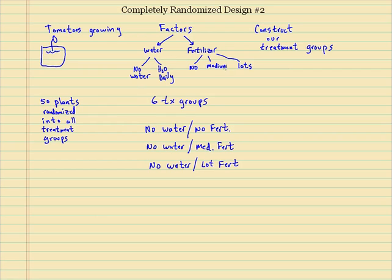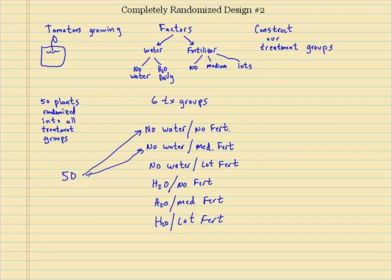So now what we would do is we have six treatment groups and we have 50 plants. So these 50 plants need to be randomized into each treatment group. And the way we figure that out is we just need to split 50 into six.